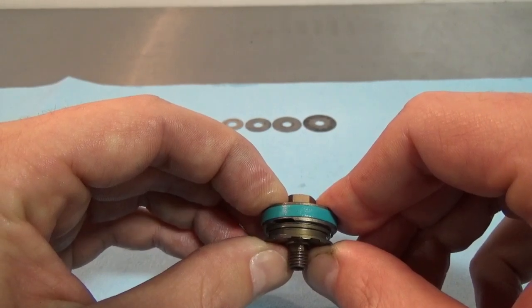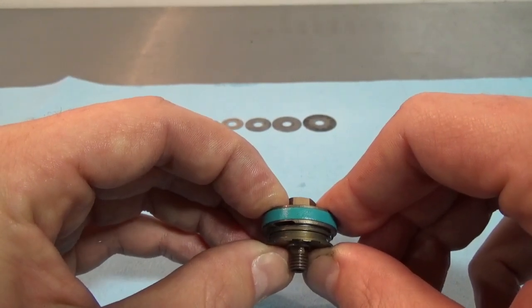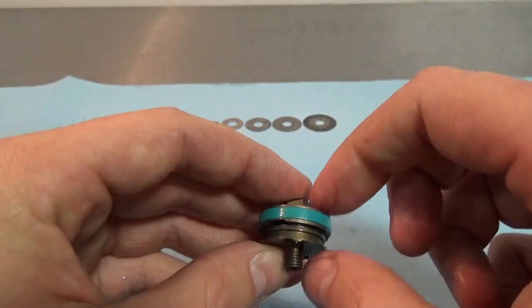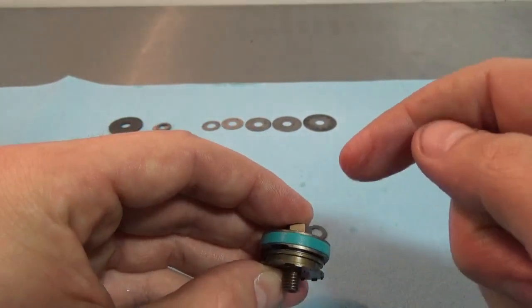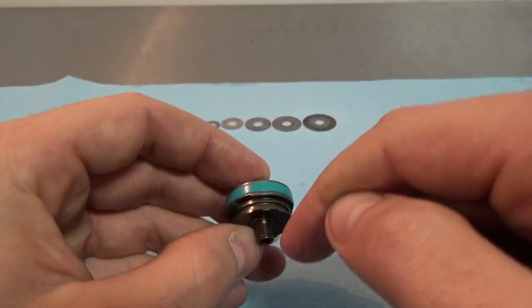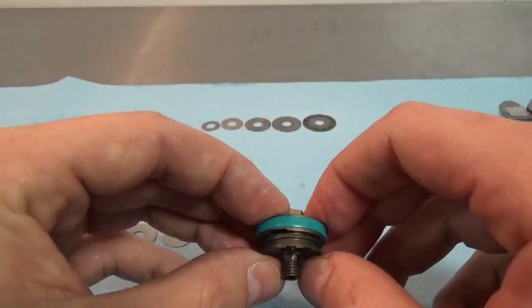And that means that until a certain amount of damping force is generated over this piston, and when I say over the piston, I mean there's a difference in pressure on this side to this side, then that valve will stay closed.